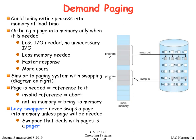Demand paging is similar to a paging system with swapping. The difference is that paging with swapping swaps the entire process — all pages associated with it — whereas in demand paging you only swap in or swap out portions of the pages allocated to a process. The component that does this is not called a swapper but rather a pager or a lazy swapper.